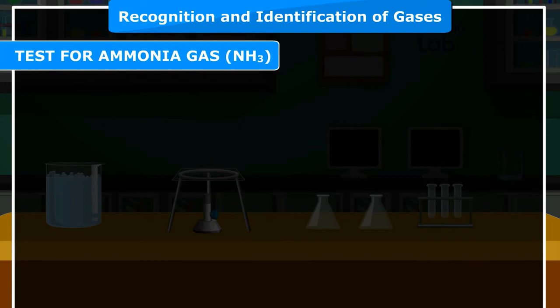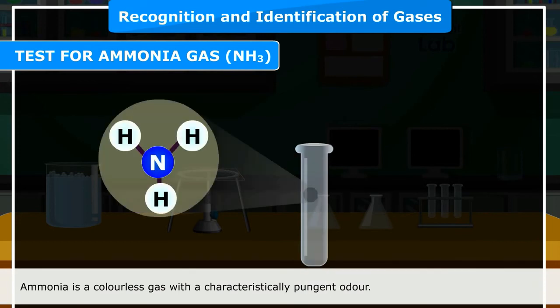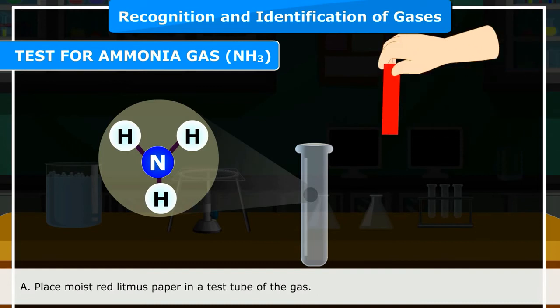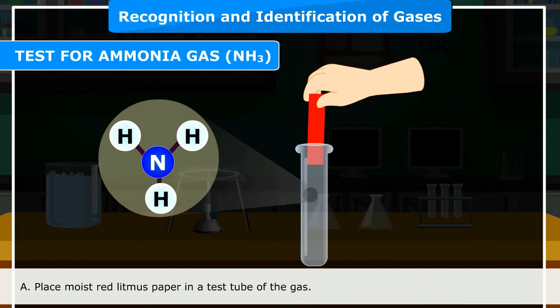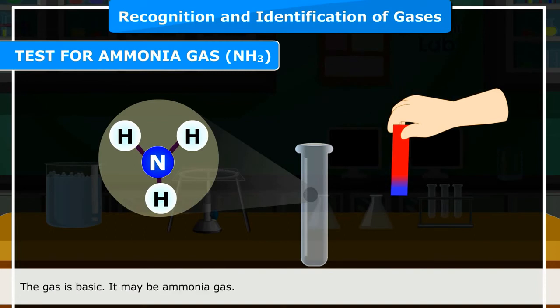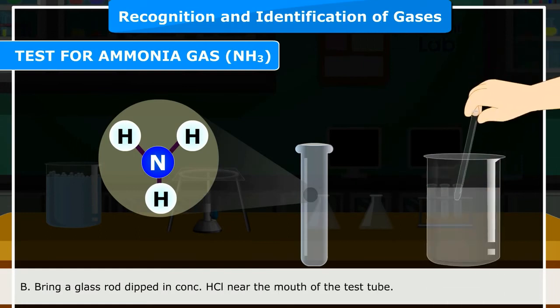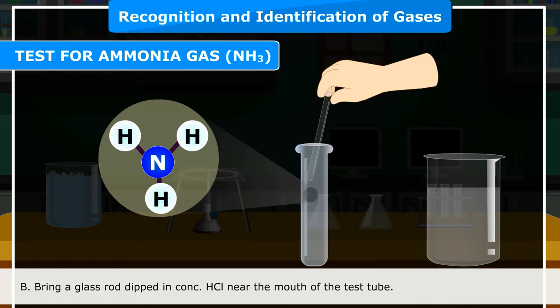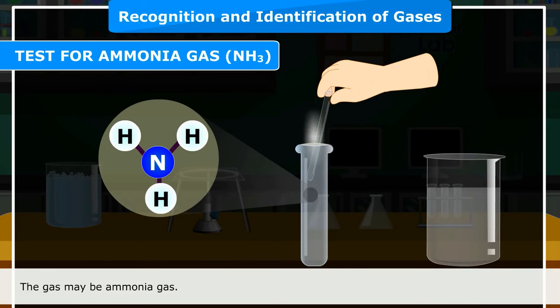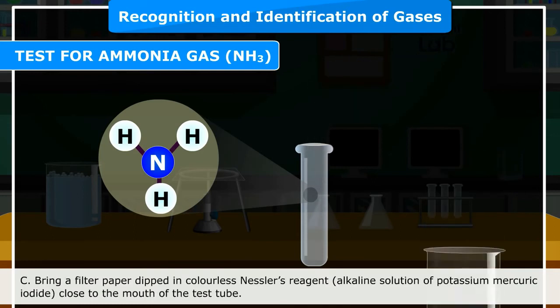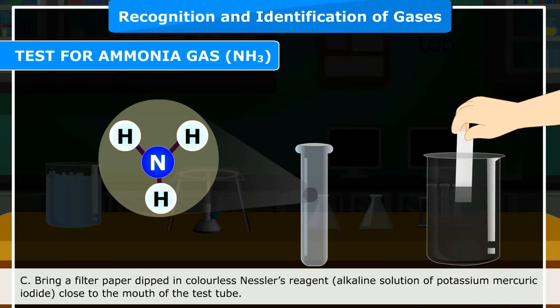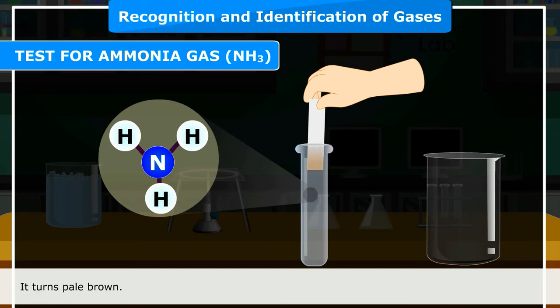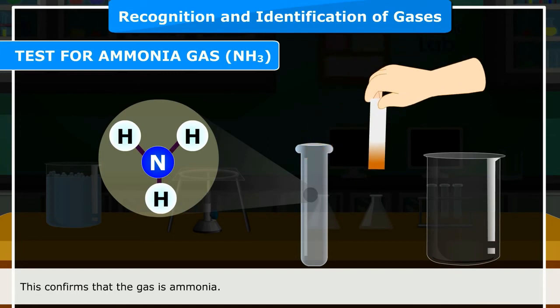Test for ammonia gas (NH₃): Ammonia is a colorless gas with a characteristically pungent odor. Confirmatory test A: Place moist red litmus paper in the gas — it turns blue, indicating the gas is basic. Confirmatory test B: Bring a glass rod dipped in concentrated HCl near the mouth of the test tube — dense white fumes are produced. Confirmatory test C: Bring filter paper dipped in Nessler's reagent (alkaline solution of potassium mercuric iodide) close to the gas — it turns pale brown. This confirms that the gas is ammonia.